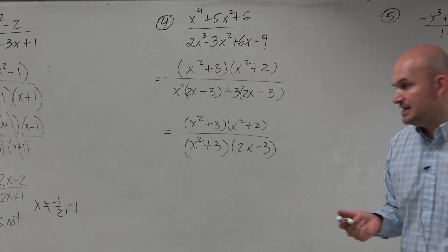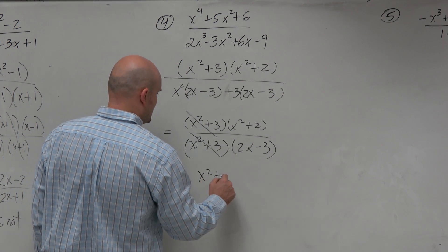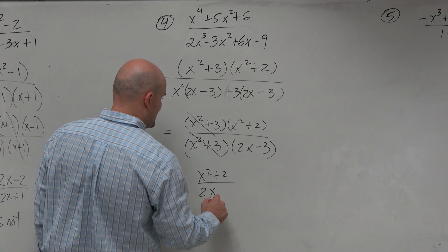So now, what you can see here is the x squared plus 3's divide out. And I'm left with an x squared plus 2 all over a 2x minus 3.